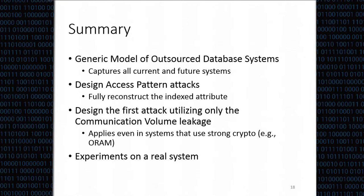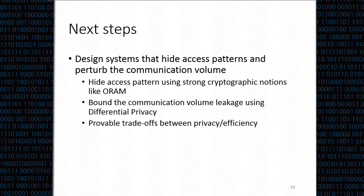To summarize: this work first presents a generic model of outsourced database systems that captures all current and future systems. We designed access pattern attacks that fully reconstruct the index attribute, and we designed the first attack utilizing only communication volume leakage, which applies even to systems using strong cryptographic tools. We also ran experiments on a real system with real datasets. As future work, we want to design systems that go beyond these two leakage channels—hiding the access pattern using ORAM or PIR, and perturbing the communication volume using differential privacy—allowing provable trade-offs between privacy and efficiency.